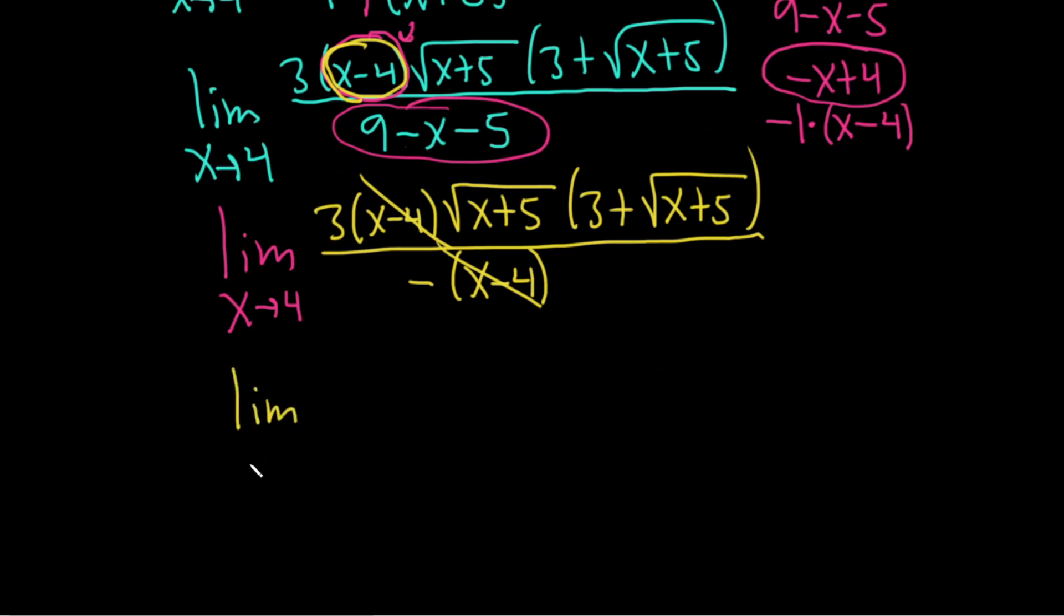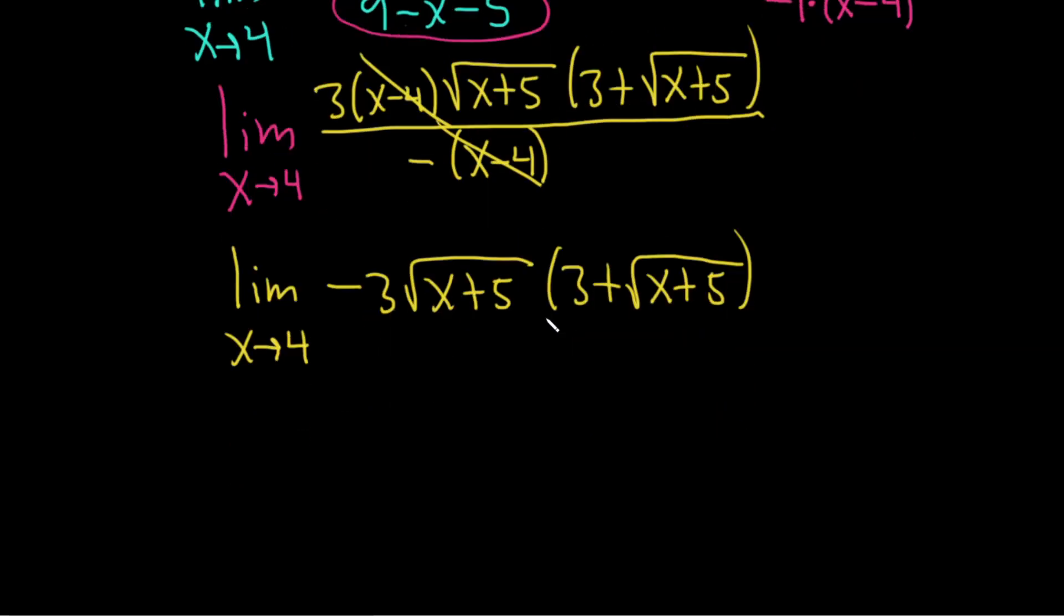So we have the limit as x approaches 4. And we're just left with a negative 1 on the bottom, so you can put it up here in the front. So negative 3 square root x plus 5, then 3 plus the square root of x plus 5. Really nice. And we're finally at a point where we can just take the 4 and plug it in for all of the x's. And when we do that, that's when we drop the limit sign. So negative 3 square root 4 plus 5, parentheses 3 plus square root 4 plus 5.